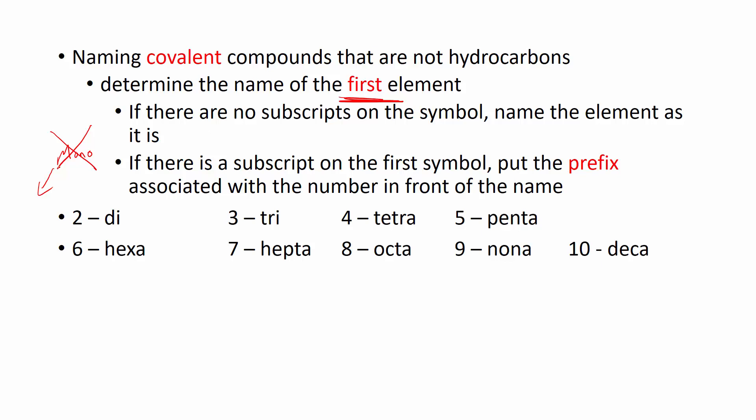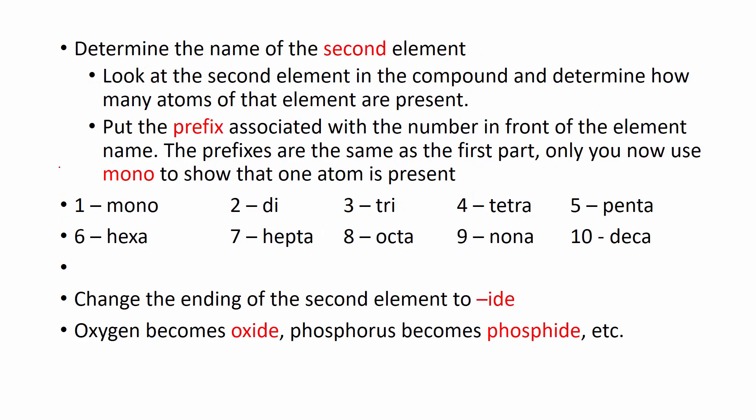Notice when we name the first element, there is no mono. Mono never gets put on the first element. All other prefixes will go there, mono will not. So carbon dioxide is never mono carbon dioxide, it's just carbon dioxide. So the first element you would never put mono. Then you determine the second element, and notice mono is an option on the second element. That's how we get carbon monoxide.